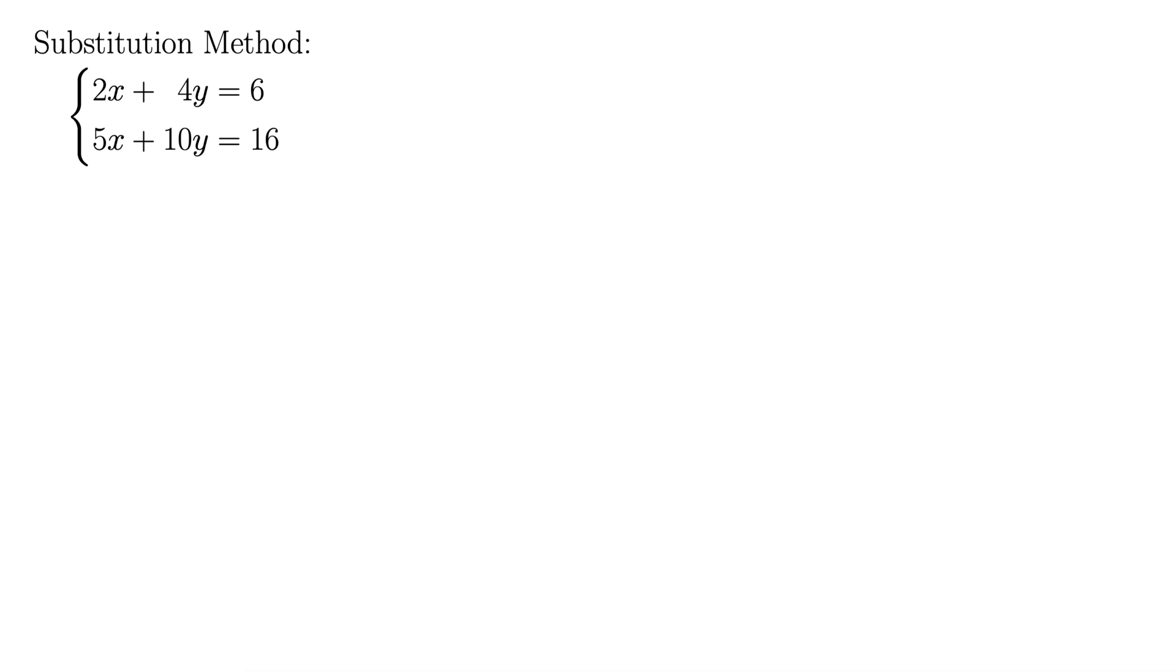Usually when we want to use the substitution method we look for a lone variable of some kind. But here we notice that there is no lone variable. All the variables have coefficients in front of them. So maybe we can divide both sides by something here to get a lone variable by itself.